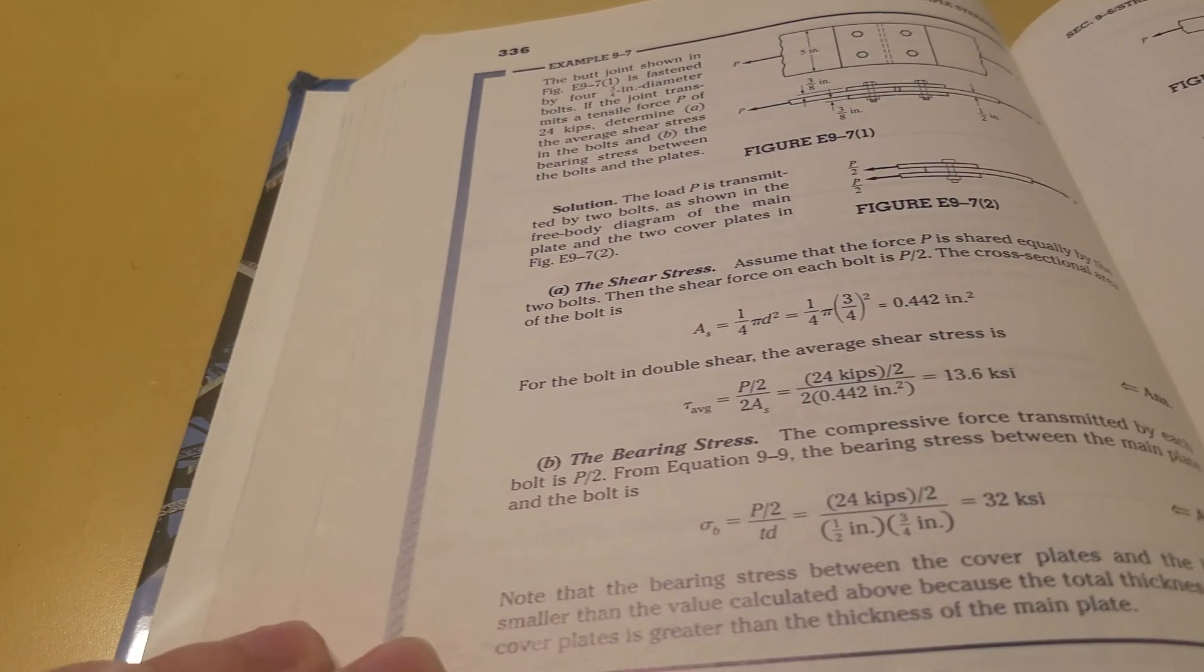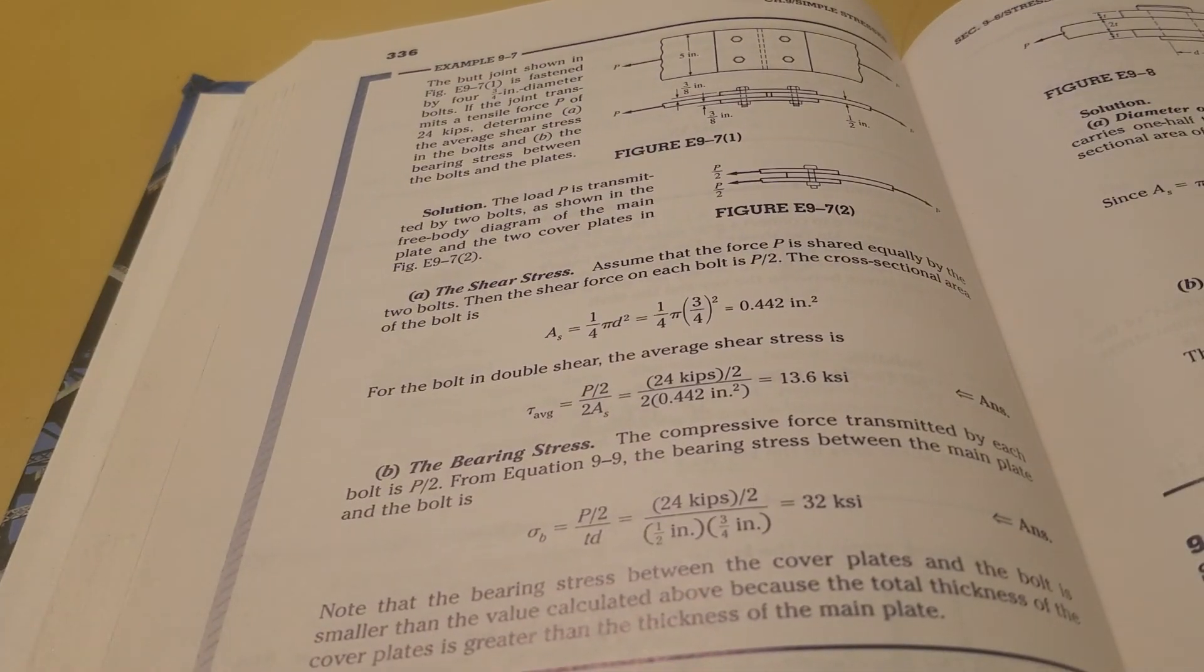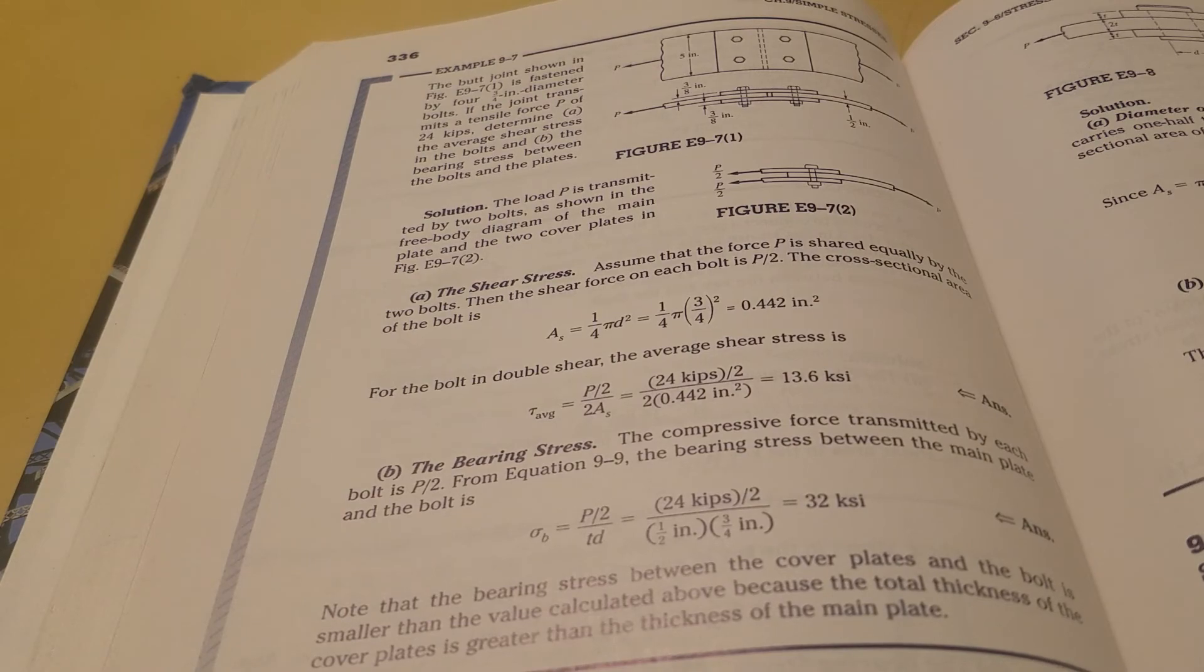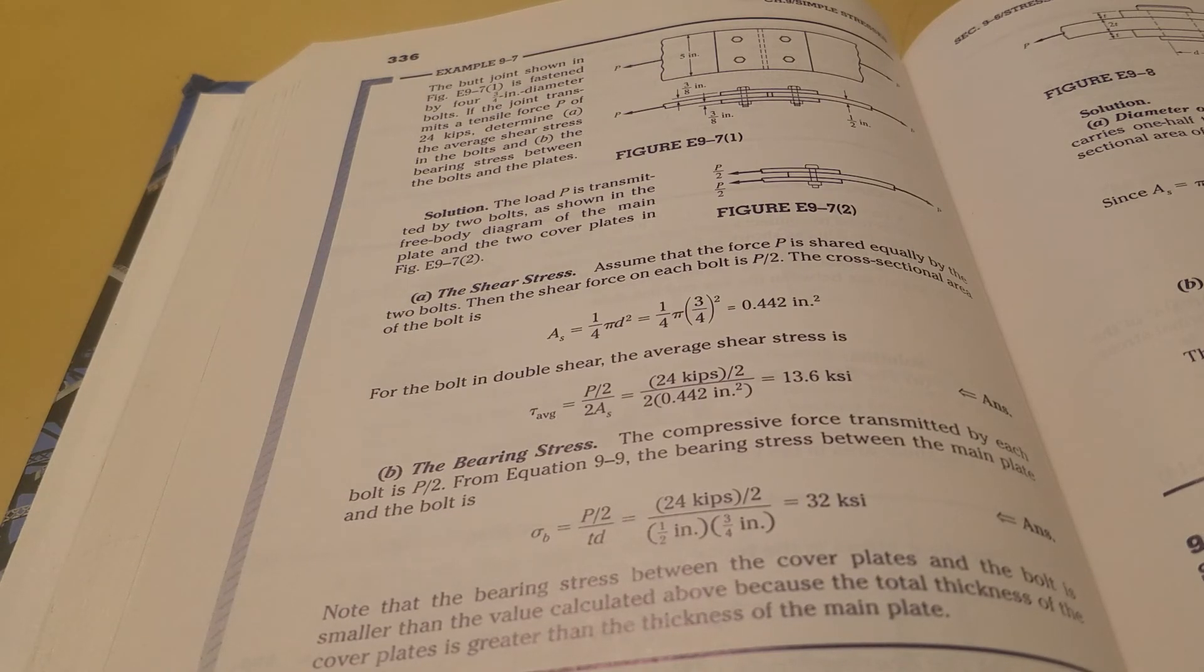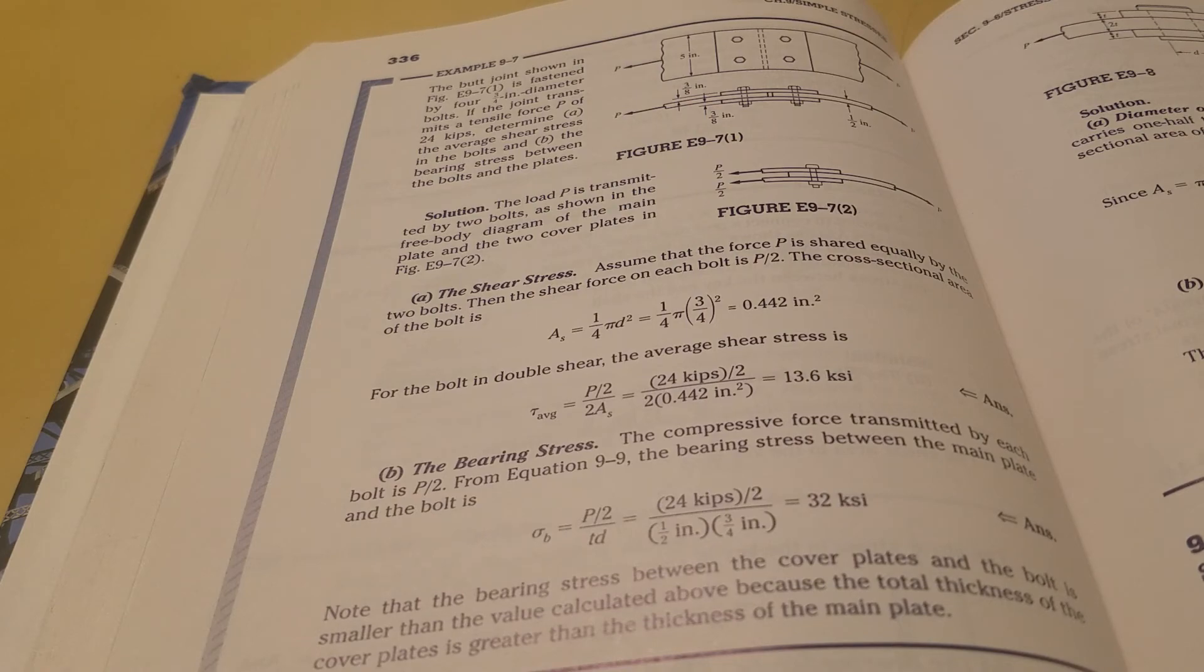Okay, example 9.7. We've got a butt joint fastened by four three-fourth inch diameter bolts.